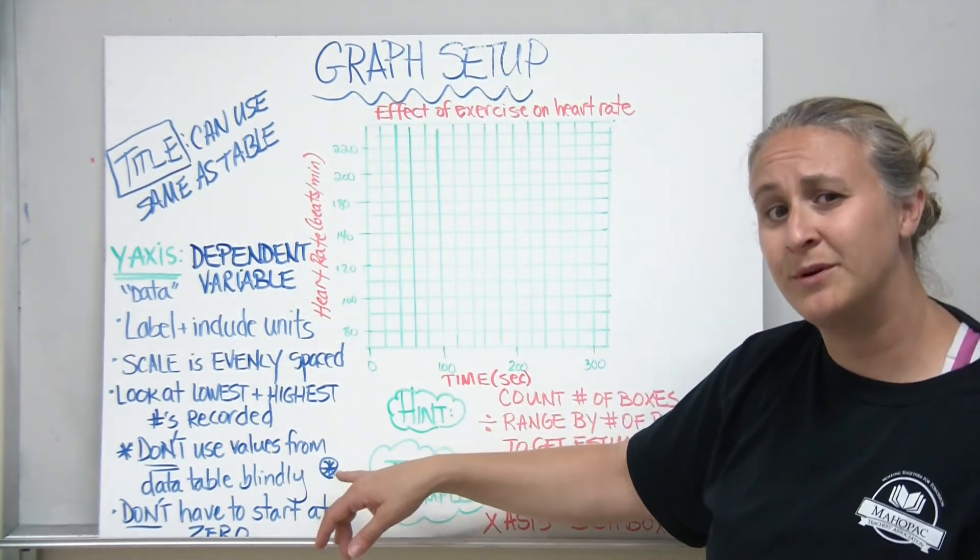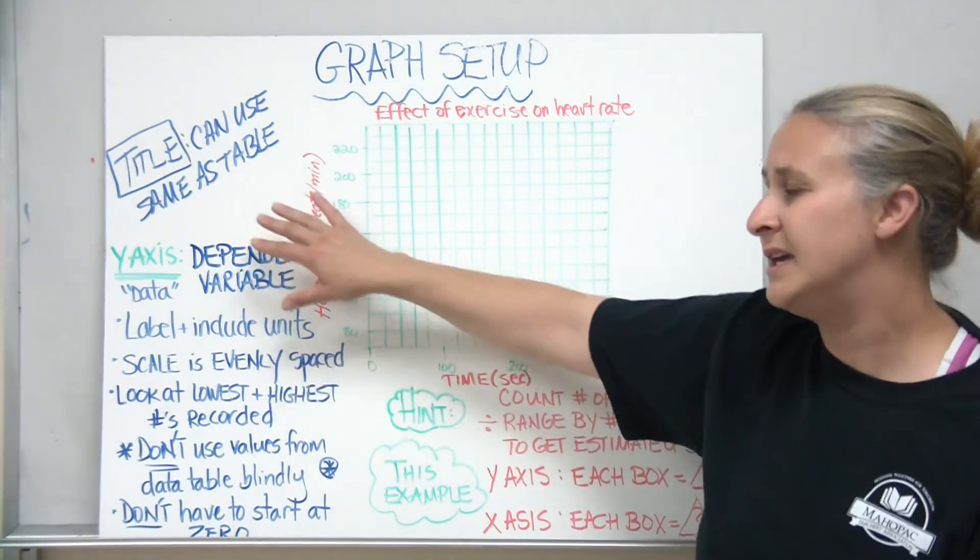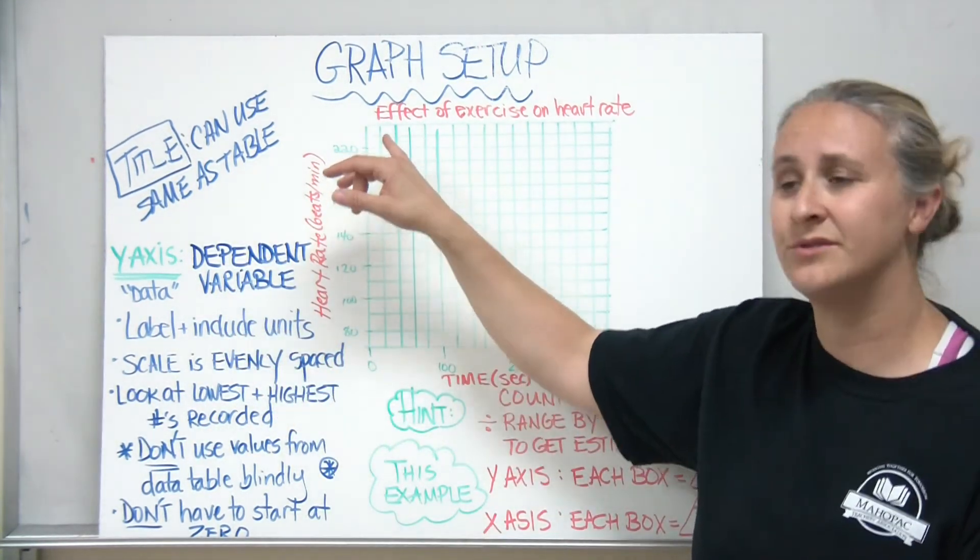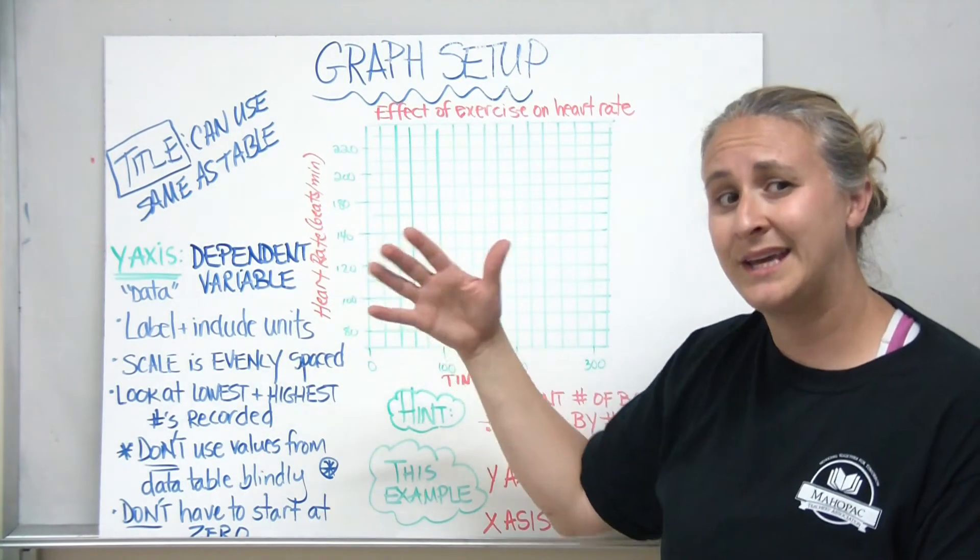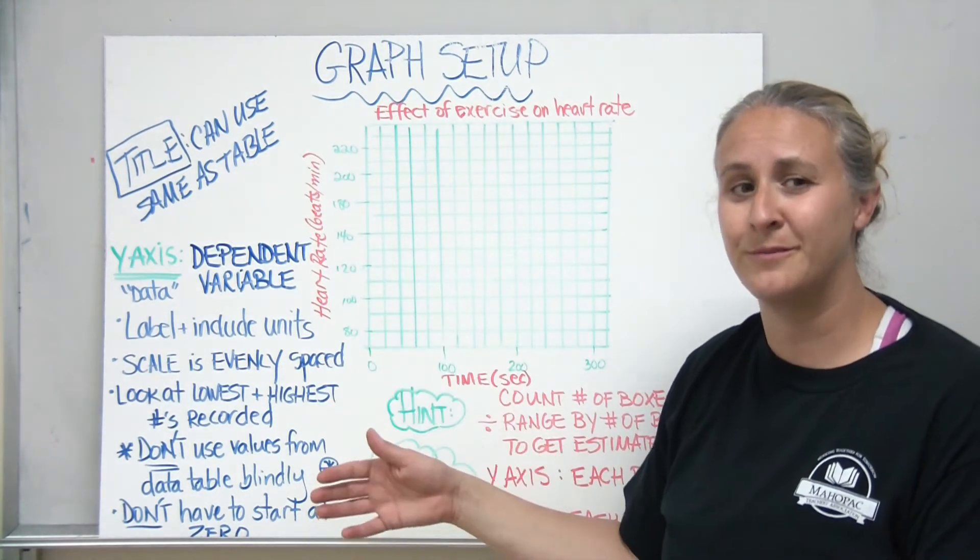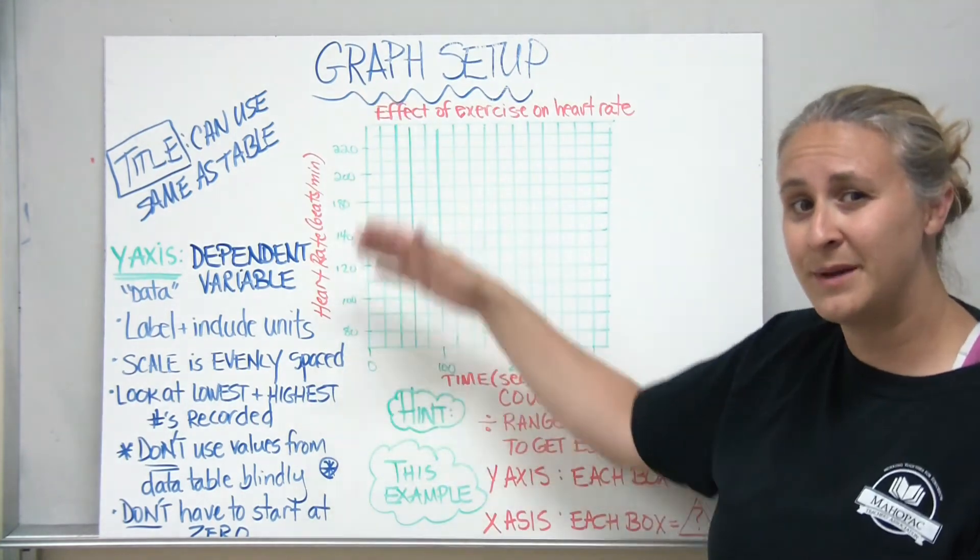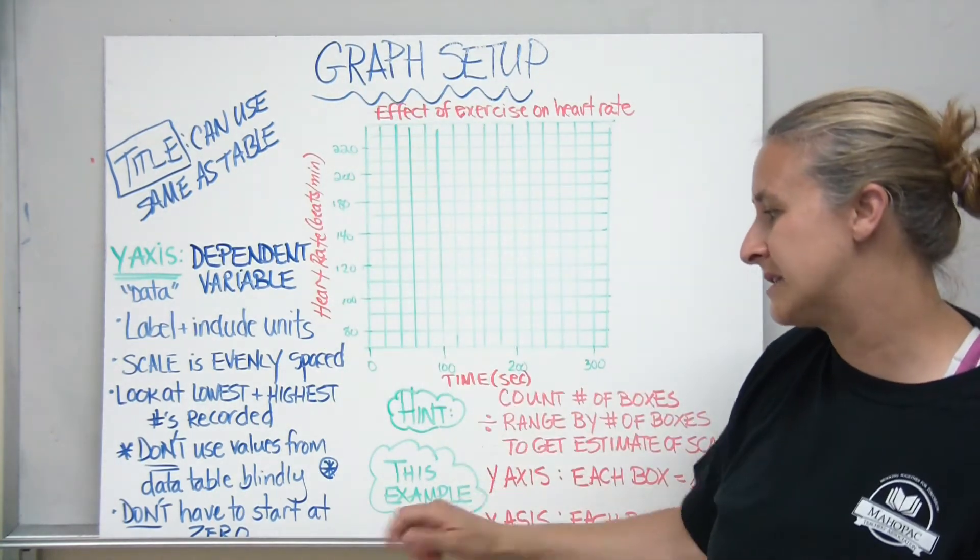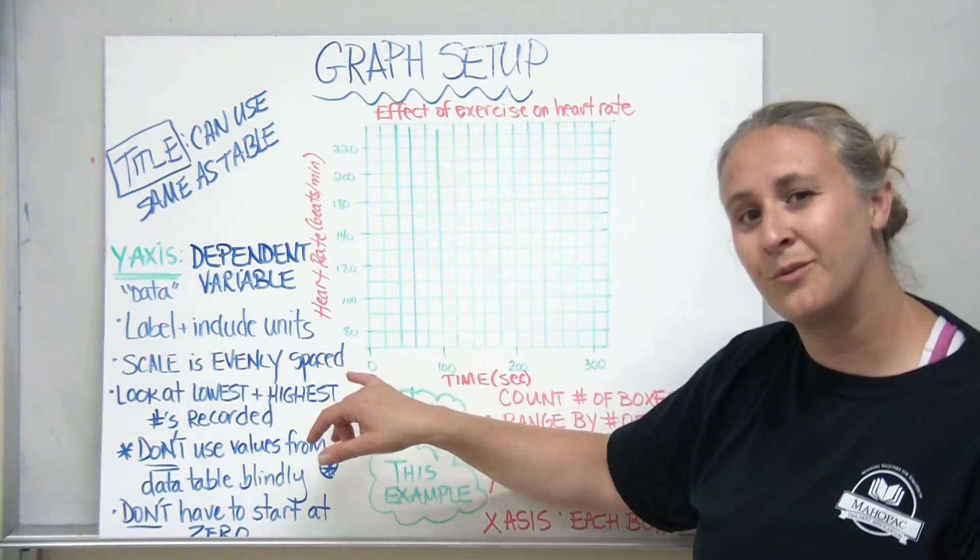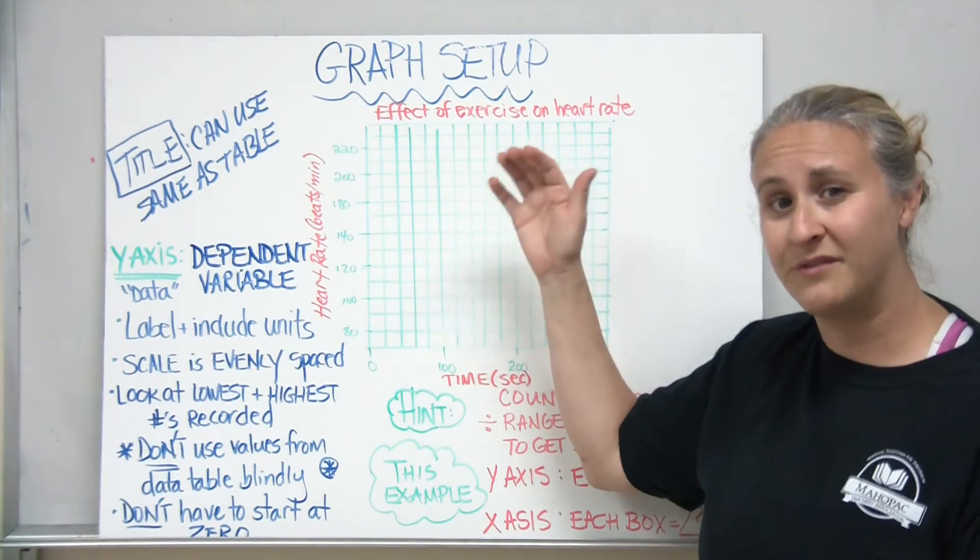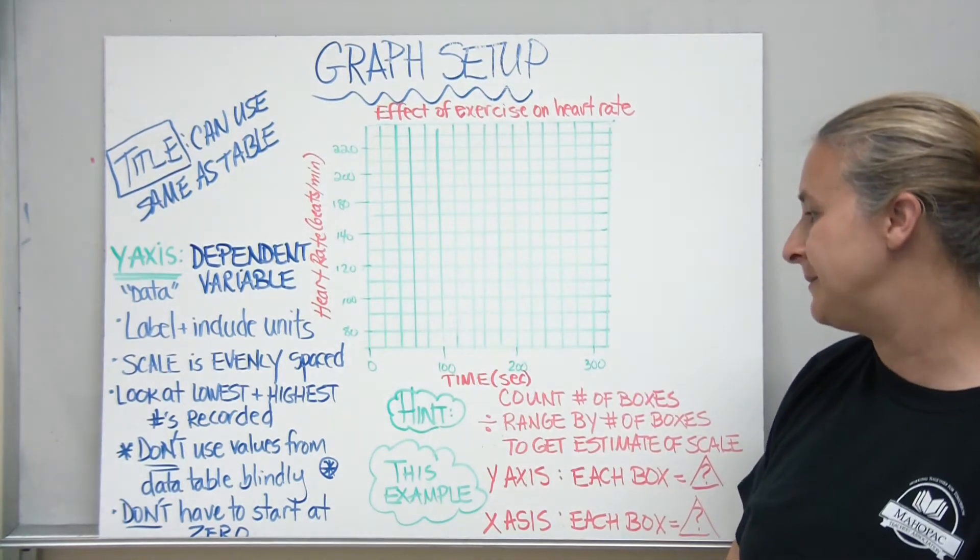Don't use values from the data table blindly. What this means is if I decided that I needed to go from 70 to 240, I can't just use the numbers that were in my data table like 75 and 86 because then my boxes wouldn't be evenly spaced. And you don't have to start your y-axis at zero. This helps you to spread your data out across the graph and use as much of the graph as possible.